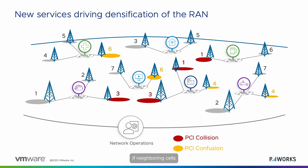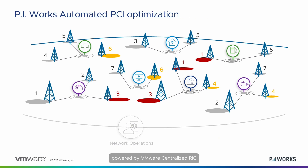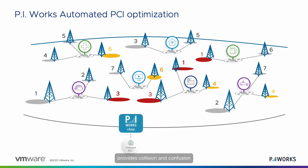If neighboring cells share the same PCI and frequency, a mobile device cannot distinguish between the cells, and this can severely impact service quality. PI Works ExaPCI Optimizer R-App, powered by VMware Centralized RIC, provides collision and confusion-free PCI configuration of the network in an automated way.